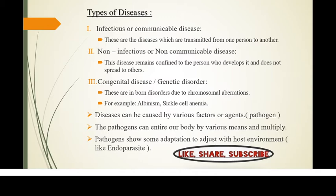Disease can be caused by various factors or agents known as pathogens. Pathogens can enter our body by various means like the mouth, nose, and ears, and they multiply inside the body, interfering with normal function and resulting in morphological and functional damage. Pathogens show adaptations to adjust to the host environment. For example, endoparasites live in the stomach or gut of the host, where enzymes and acids would normally destroy pathogens, but these endoparasites have adapted to survive there.